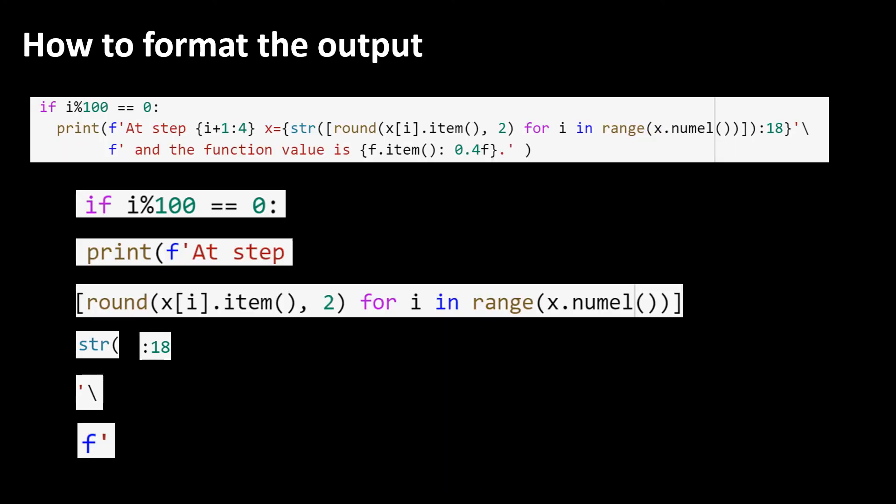I formatted the output using the same f format at the beginning but before going to that I should say that I print out the statement every 100 steps. Because x is a tensor or a vector I loop over every item and extract that item from its tensor and put them into a list.